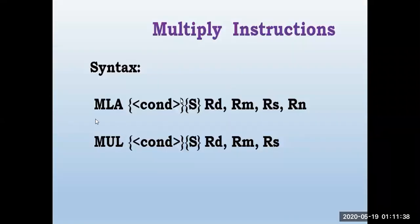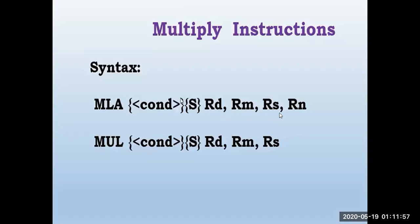The multiply instruction MLA has the syntax: MLA, condition, and S-bit. When S is present, it will update the flags in the CPSR register. MLA stands for Multiply and Accumulate. It takes two source registers, multiplies RS and RN, adds RM, and stores the result in RD — the destination register.